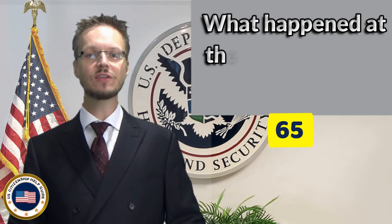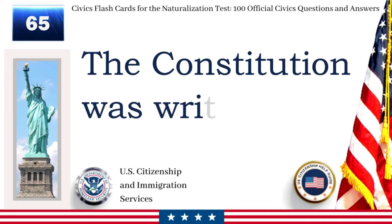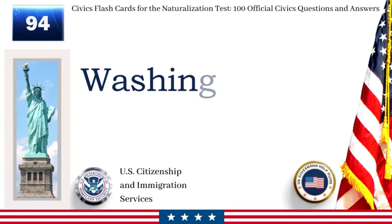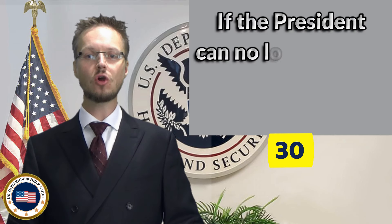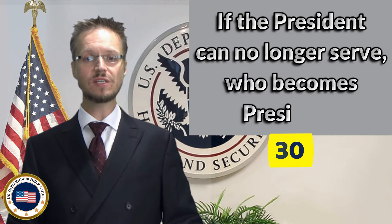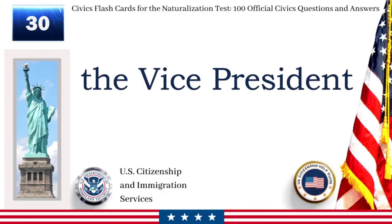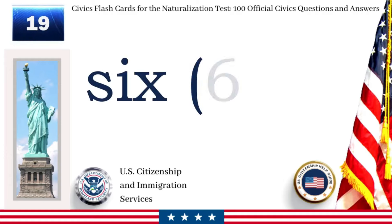What happened at the Constitutional Convention? The Constitution was written. What is the capital of the United States? Washington, D.C. If the president can no longer serve, who becomes president? The vice president. We elect a U.S. senator for how many years? Six.